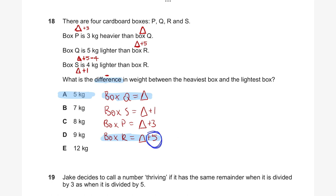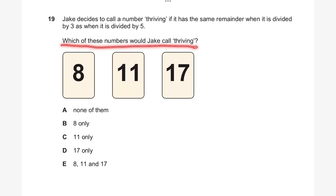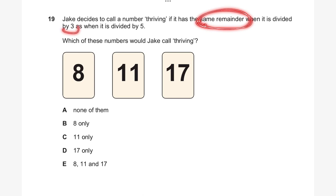Question nineteen. Jake calls a number 'thriving' if it has the same remainder when divided by three as when divided by five. Which of these numbers would Jake call thriving? We divide each candidate by three and by five and check if the remainders match. Trying 8: 8 divided by 3 gives remainder 2; 8 divided by 5 gives remainder 3 — not the same, not thriving.